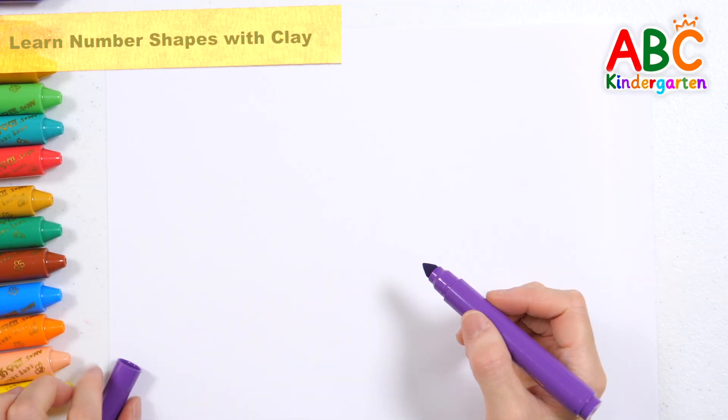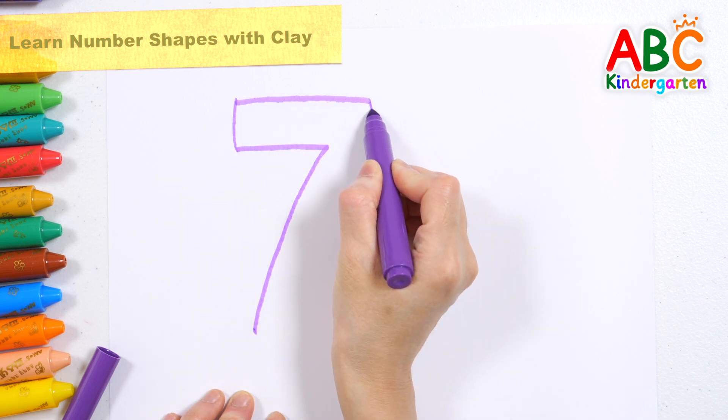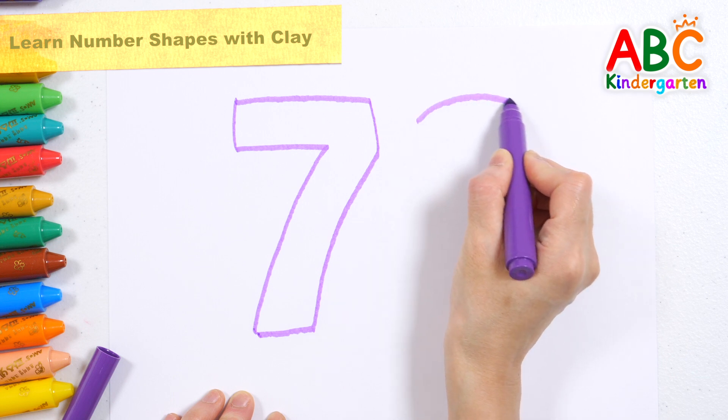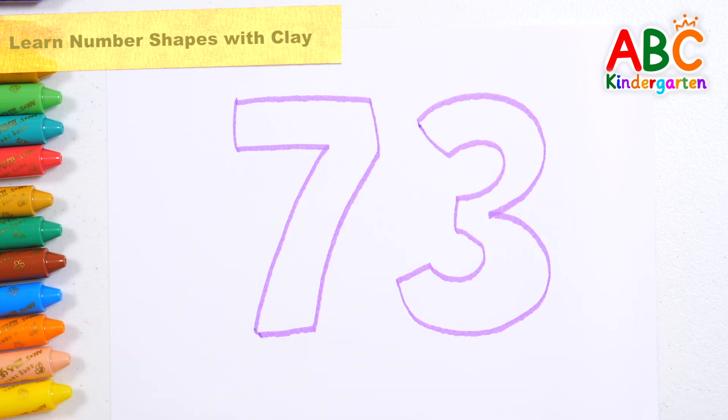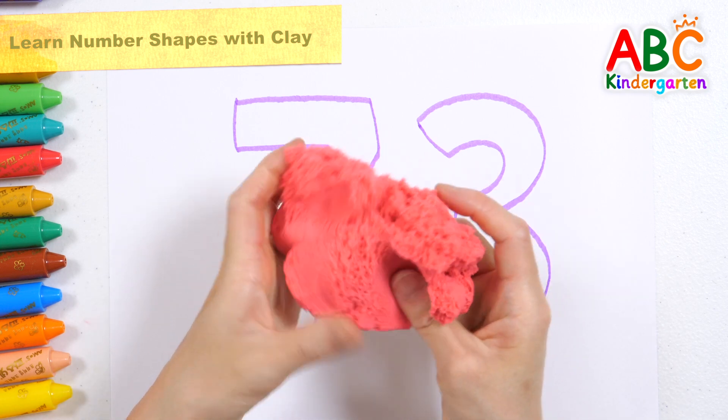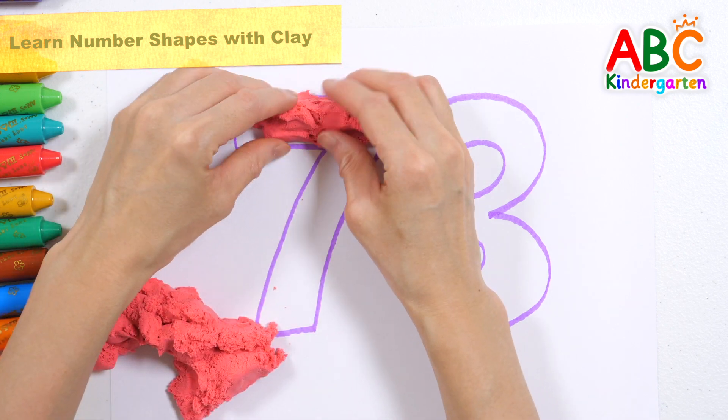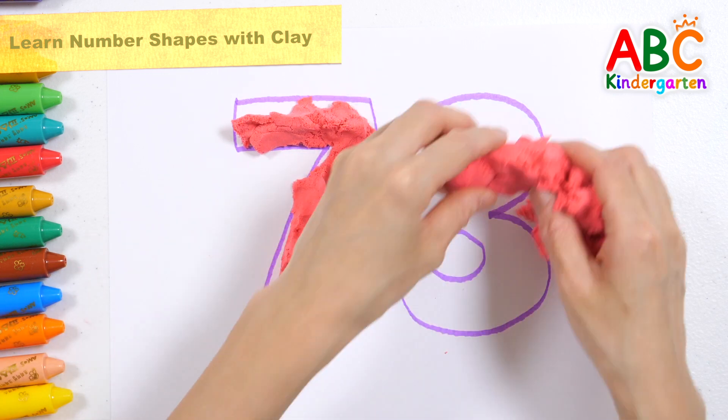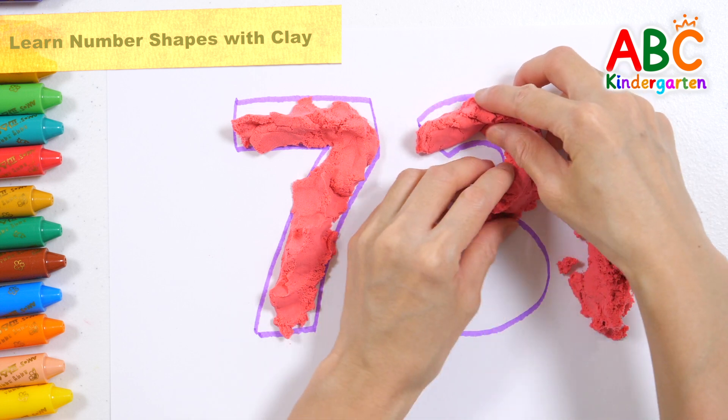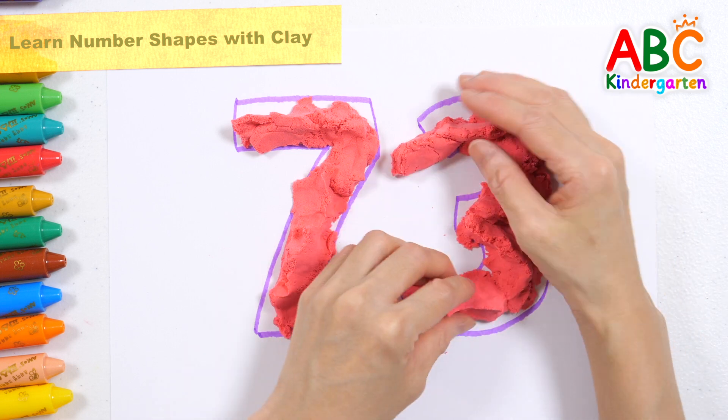Let's draw numbers with a purple colored pen. Guess what number it is. The number is 73. Learn the shapes of numbers by placing pink clay on top of the drawn number 73.